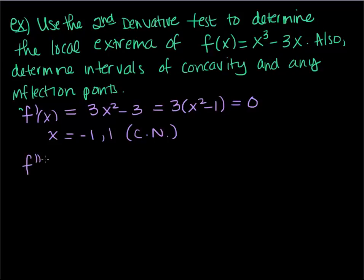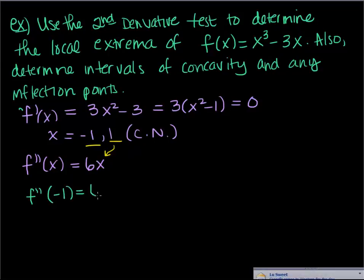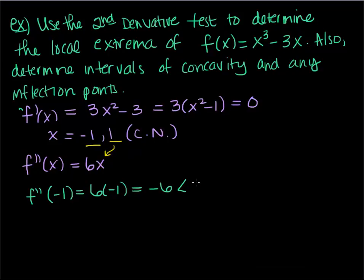Now I'm going to take the second derivative of this function. I just take the derivative of the first derivative, and that gives me 6x. Now the second derivative test tells me to take these critical values and plug them into the second derivative to see what the sign is — positive or negative. So f double prime of negative 1 is 6 times negative 1, which is negative 6. That means I'm less than 0 — I'm concave down — so I have a max.